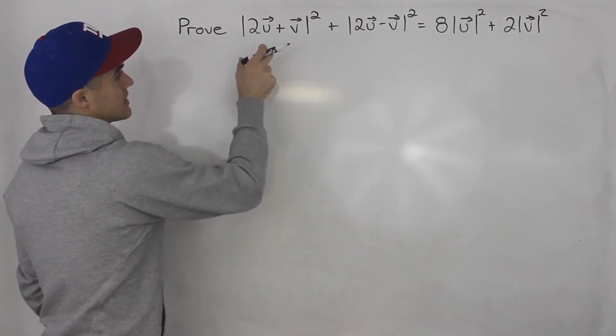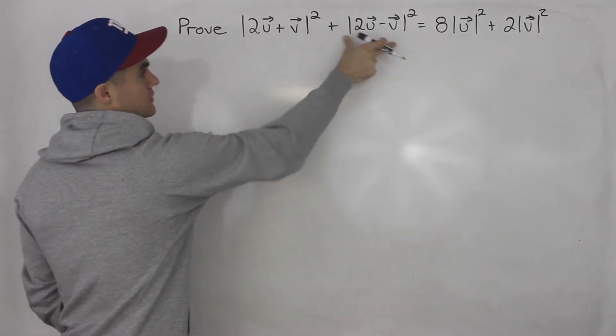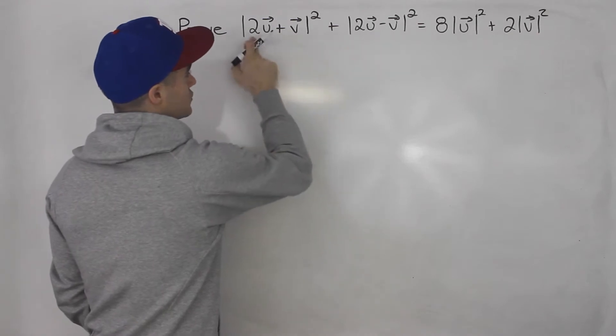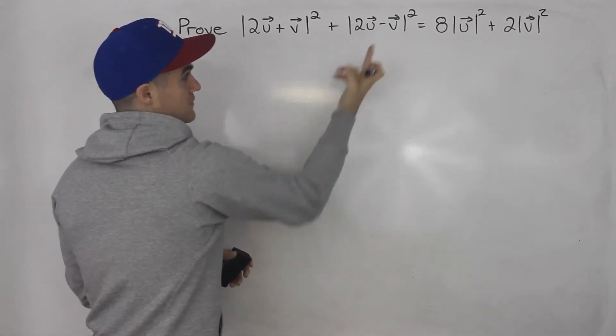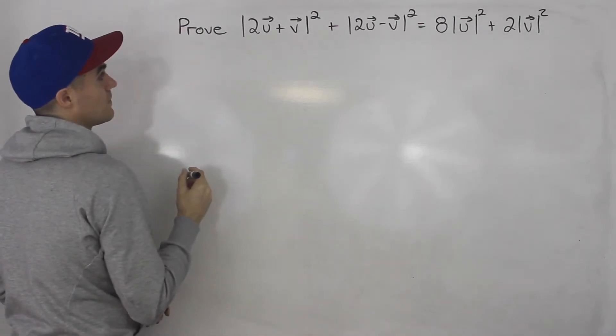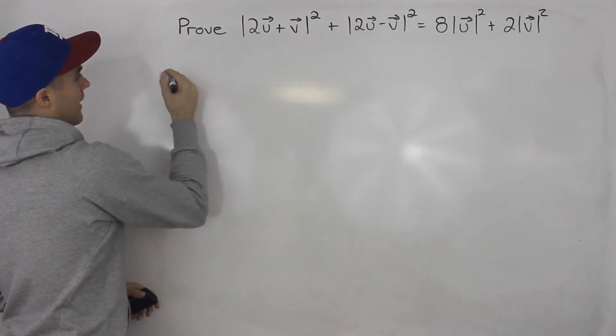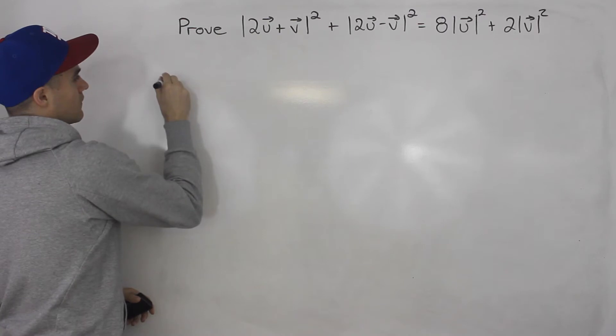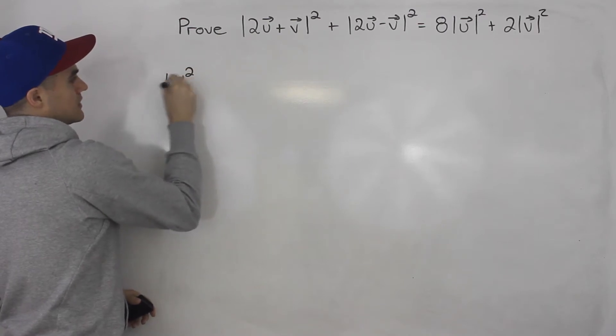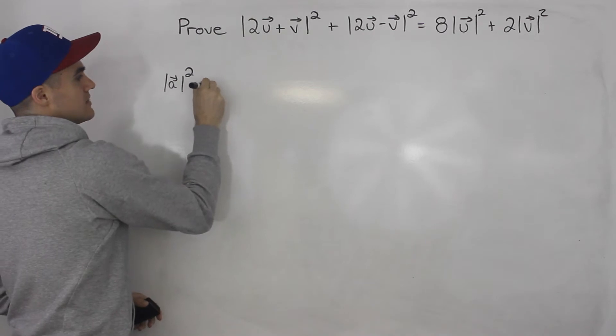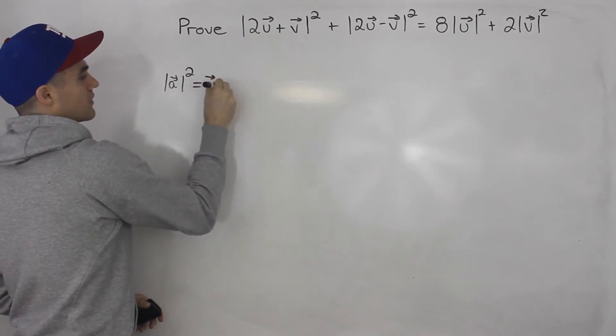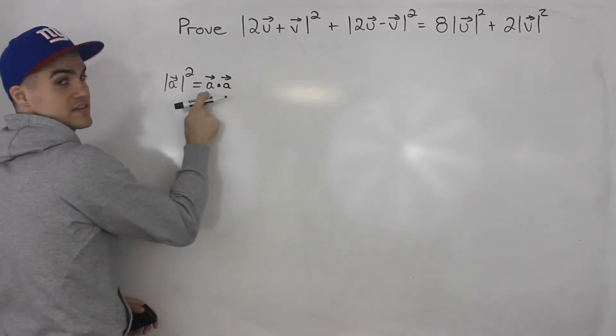Now notice that we got two magnitudes here squared, and 2u plus v is a vector on its own, and 2u minus v is a vector on its own as well. And we know any vector where we take the magnitude of it and square it, what does that equal? It's equal to the dot product of that vector with itself.